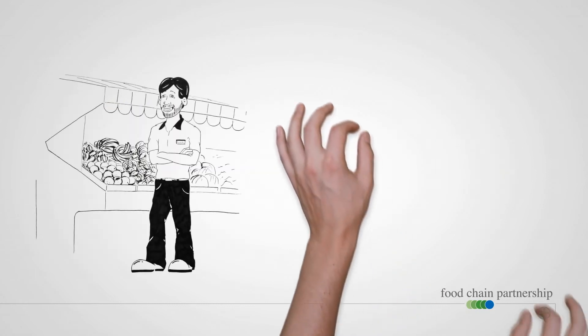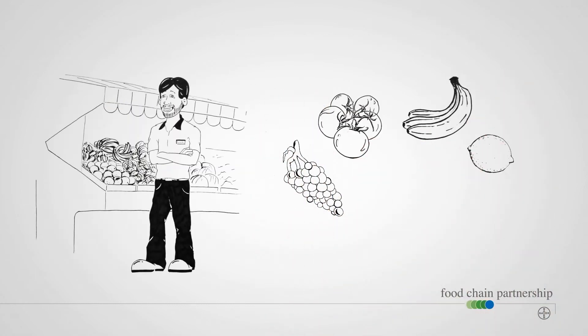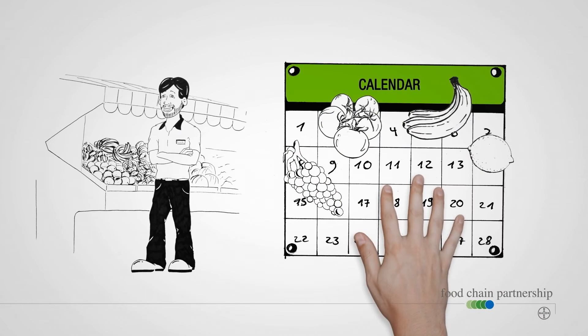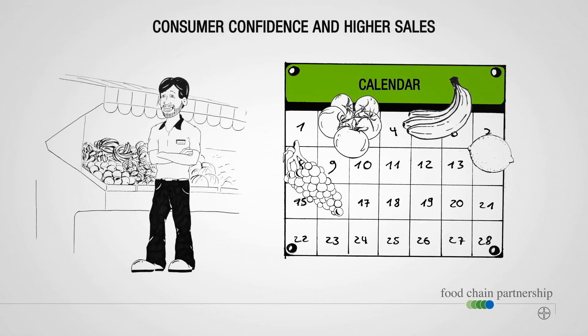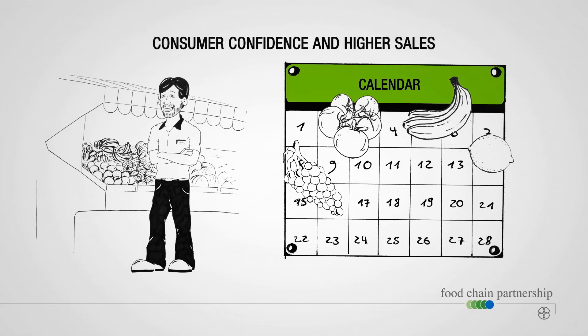Retailers expect fruit and vegetables of consistently high quality throughout the year because that is exactly what their increasingly food-conscious customers want. Efficient cultivation methods ensure competitive prices, which results in increased customer confidence and higher retail sales.